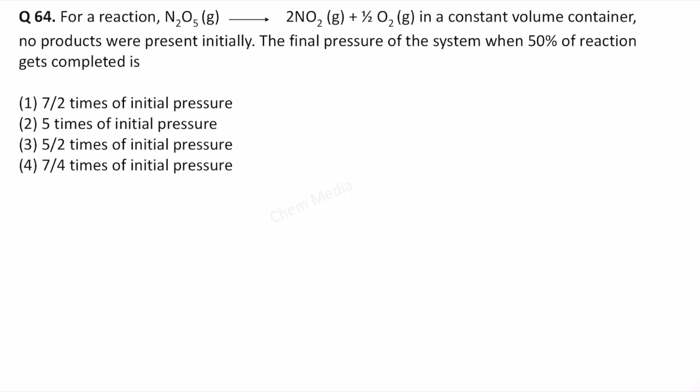Hello everyone, here is a question from chemical equilibrium. For a reaction, dinitrogen pentoxide gets dissociated as nitrogen dioxide and oxygen in a constant volume container. No products were present initially. The final pressure of the system when 50 percentage of the reaction gets completed is how much?